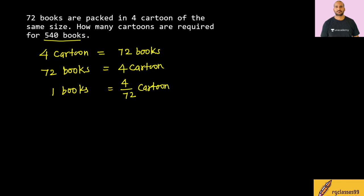So this is the unitary method. In the unitary method, we find one unit first, and then we scale up. So the same thing we do here — we find for one book, how many cartons are needed.